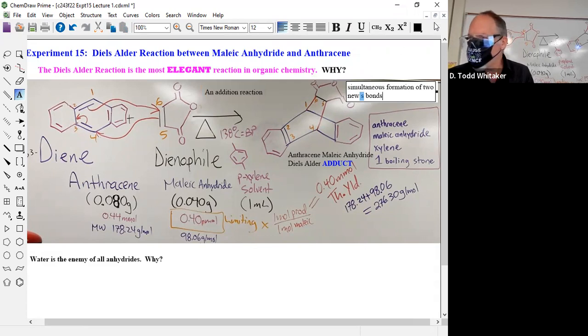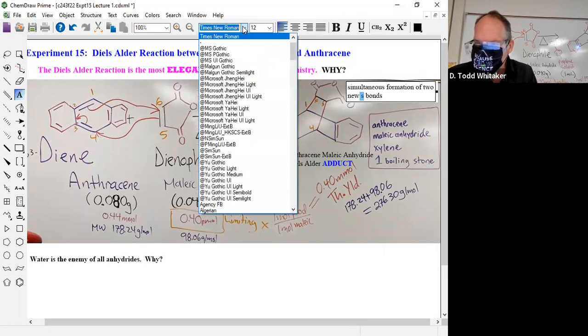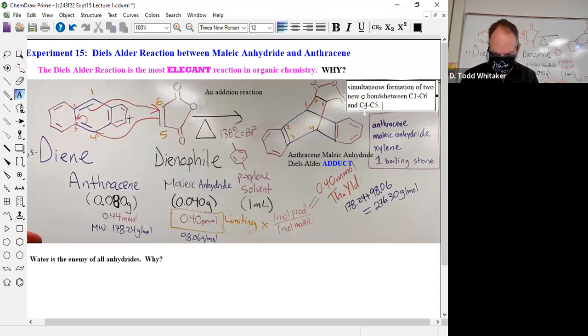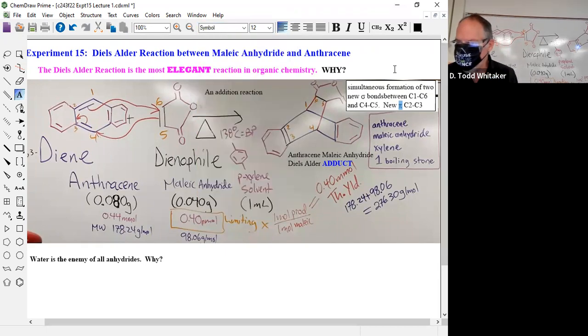I can't get my fonts because my zoom stuff's in the way and I can't move my box. My zooms are right under my screen share notification. There it is. Simultaneous formation of two new sigma bonds between what two carbons, C1 to C what? One is not bonded to four. One to six is a new bond, and C4 to C5. New pi between two and three, right? C2 to C3. New pi symbol.